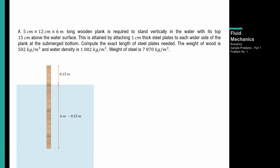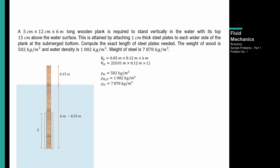So yun nakasubmerge, so 6 meters minus 0.15 meters. Magagawa daw yun kapag nilagyan ng 1 cm thick steel plates to each wider side — yung wider side ay yung 12 cm. Ang required kung ano yung length ng steel plates, so yun yung nasa figure. Volume ng wood: 0.05 by 0.12 by 6 meters. Convert na sa meters para madaling mag-solve.